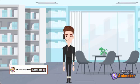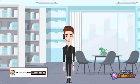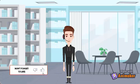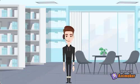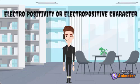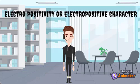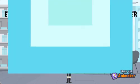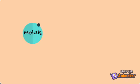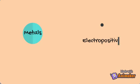Hello everyone! I hope you guys are doing great. Our today's topic is Electropositivity. So let's get started. Metals have the tendency to lose electrons. This property of metal is termed as Electropositive character or Electropositivity.